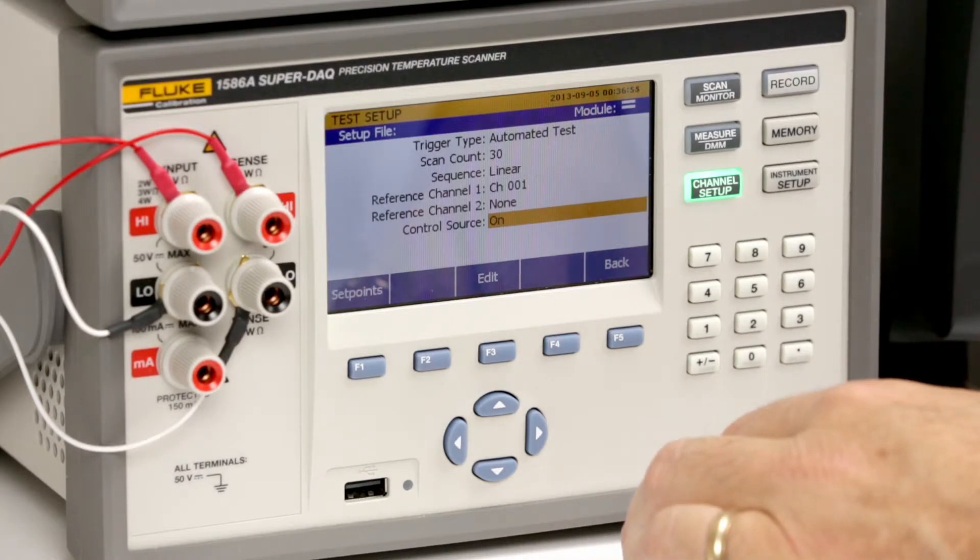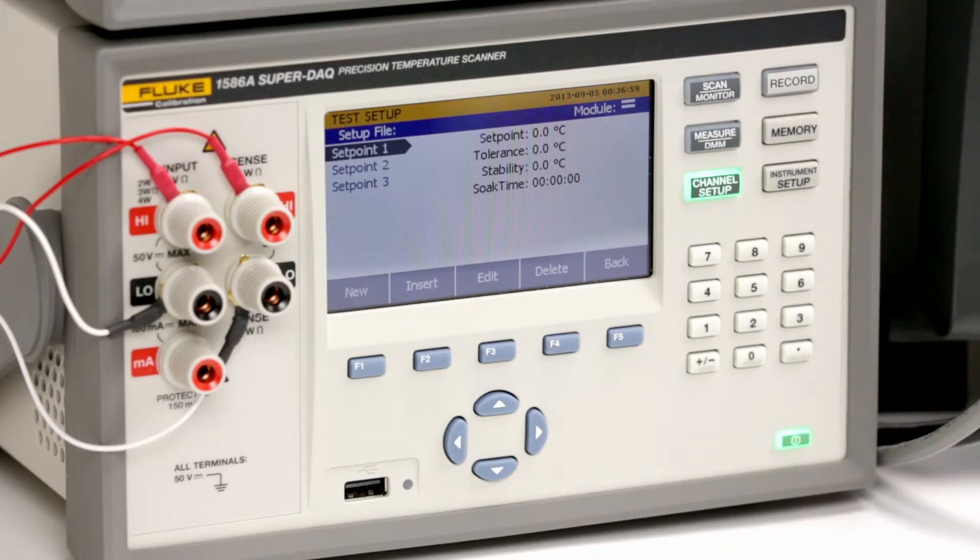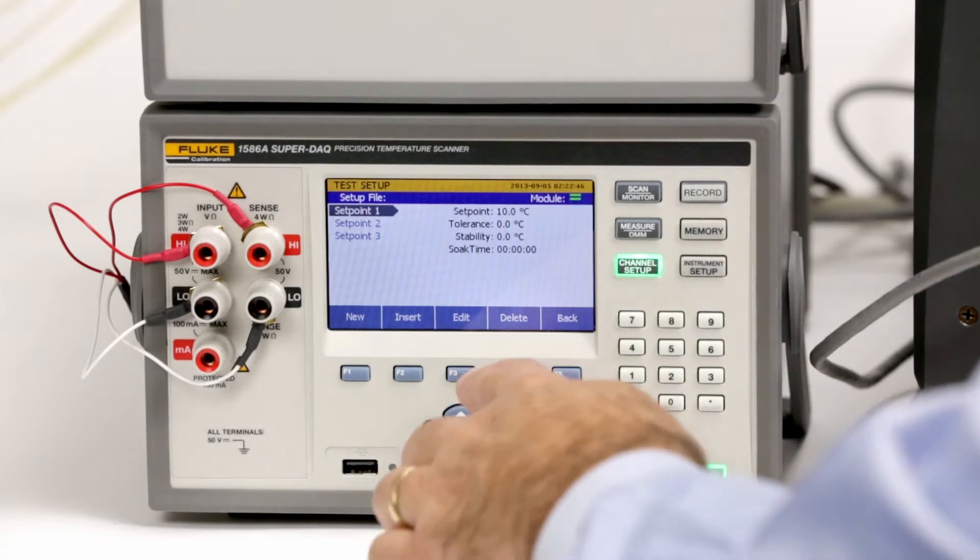Once configured, press set points. For this demonstration we are using a Fluke 9142 Field Metrology Dry Well. We'll use three set points for our tests.